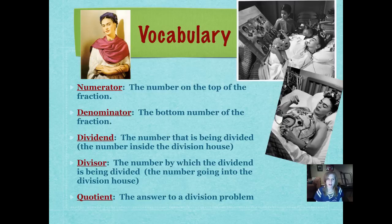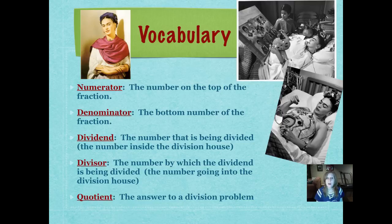Here is our vocabulary. The numerator is the number on top of the fraction. The denominator is the bottom number of the fraction. The dividend, in a division problem — when we're talking about the division house — is the number that is being divided, the number inside the division house. The divisor is the number by which the dividend is being divided — that's the number going into the division house. And the quotient, of course, is the answer to a division problem.